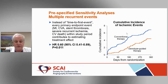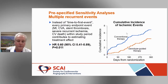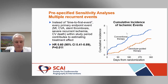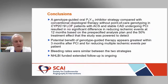Looking at cumulative events rather than time to first event — which I'd argue is more important for understanding total event burden — there was early separation at 90 days with continued separation. By one year there was a significant reduction with p=0.01 and a hazard ratio of about 0.6. Total cumulative event rate was still under 7% for conventional therapy and about 4% for genotype-guided therapy.